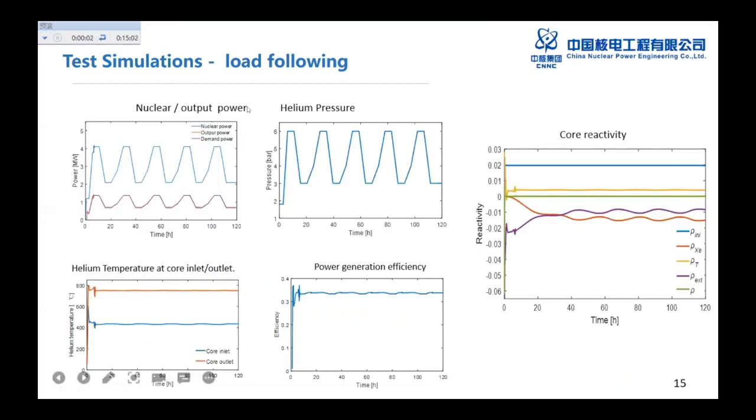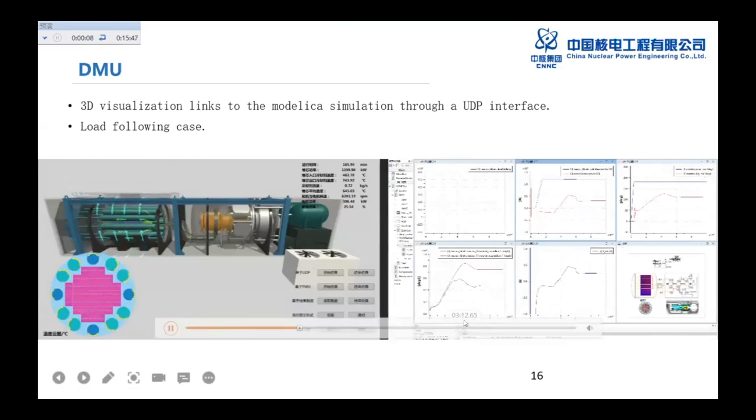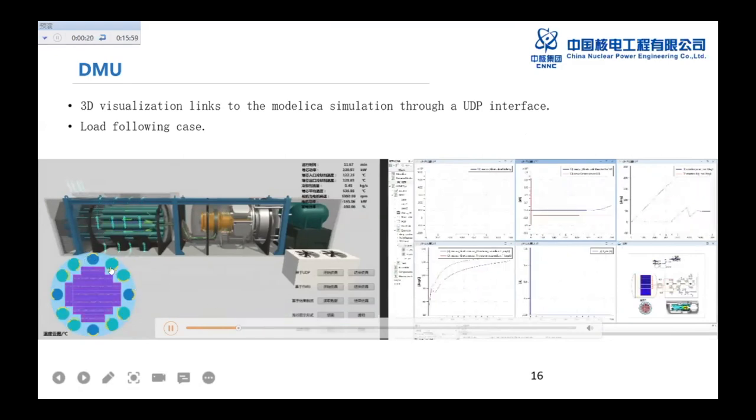And here is the result. You can see this output power is almost quite the same as the demand power in this feature. And the way we just change the helium pressure. And all the helium temperature at the core inlet, outlet, almost kept constant. And the power generation efficiency is also quite stable. And we also made a FMU here by using the FMU interface to create a FMU and all the important value such as the control drum rotation can be realized here.